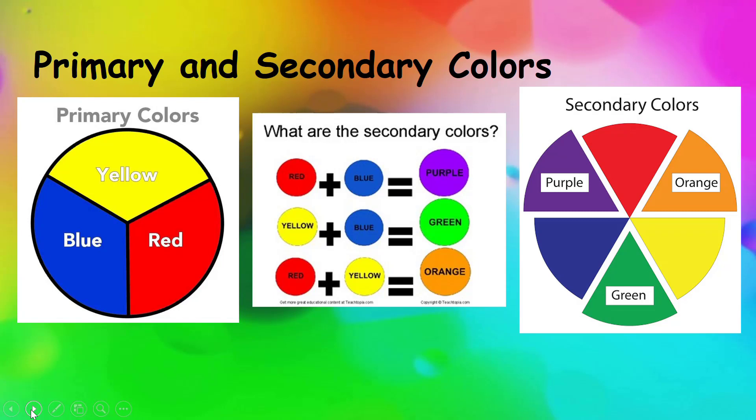When you add two primary colors together, you get a secondary color. For example, red plus blue equals purple, sometimes called violet.